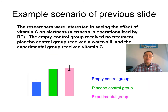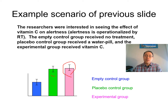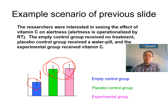So this pattern means there is a significant effect of the placebo; however, the effect of treatment is not really there. The researchers would have committed a type one error if the placebo control was not in place. For example: researchers interested in the effect of vitamin C on alertness had an empty control group receiving no treatment, a placebo control receiving a water pill, and an experimental group receiving vitamin C. The experimental group that received vitamin C and the ones that received the water pill do not perform very differently, but there's a significant difference between the empty control and placebo groups — showing the power of suggestion.